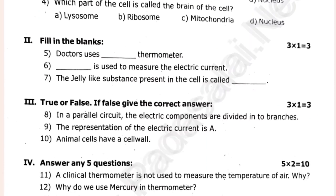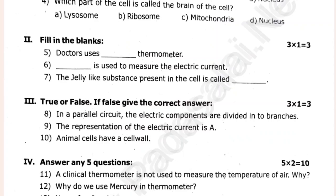So let's see, Philips: doctors use dash thermometers. Dash is used to measure the electric current. The jelly-like substance present in the cell is called as — if false, give the correct reasons.